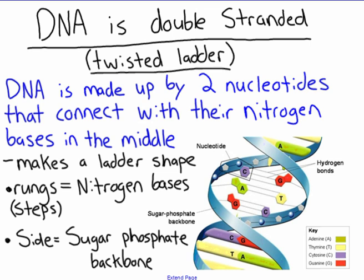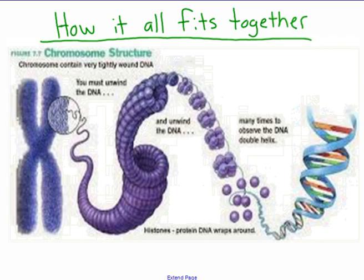Bringing everything together: DNA is double-stranded and looks like a twisted ladder — many of you have seen this picture before. The sides of the ladder are the sugar-phosphate backbone, and the rungs in the middle — the steps — are the nitrogen bases A, T, C, and G. So the sugar-phosphate backbone forms the sides, and the nitrogen bases form the steps.